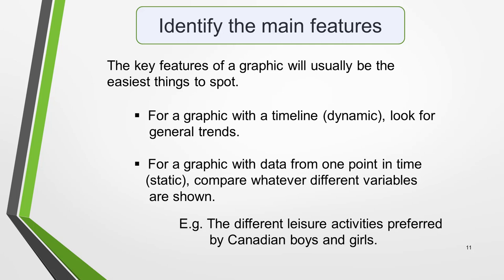The key features of a graphic will usually be the easiest things to spot. For a bar chart with a timeline — known as a dynamic bar chart, such as in our sample question — look for general trends. The timeline will give you the biggest clues as to the most significant trends. Alternatively, a bar chart or line graph may be static, with the data coming from one point in time. For this type of graphic, you would need to compare whatever different variables are shown.